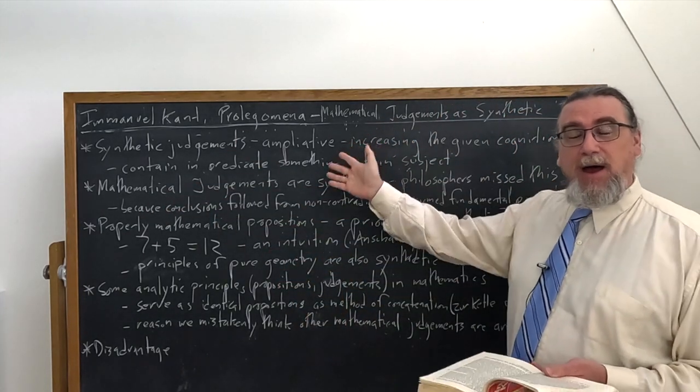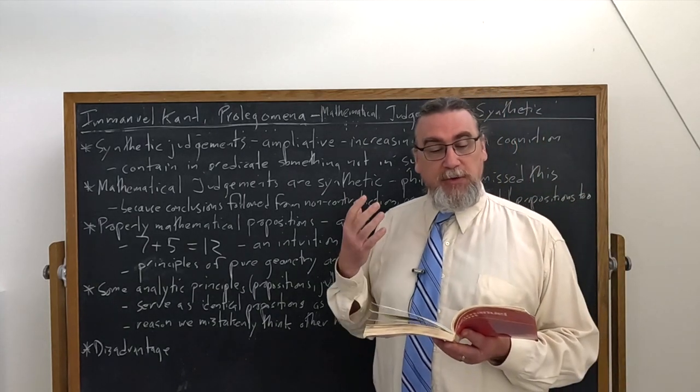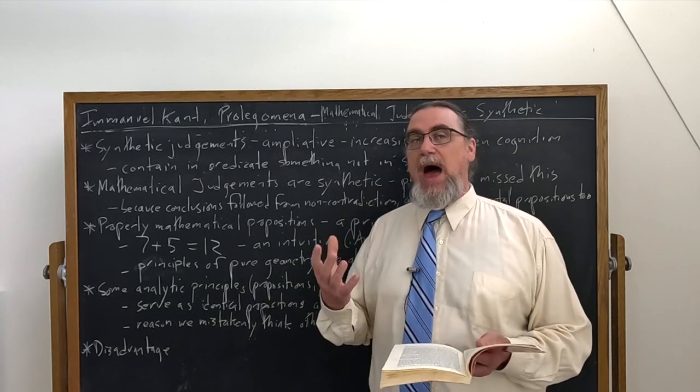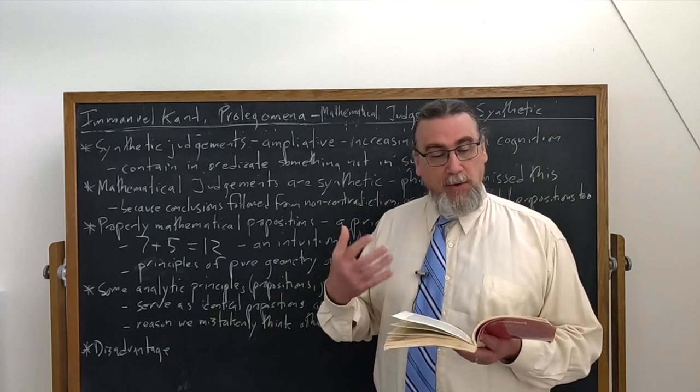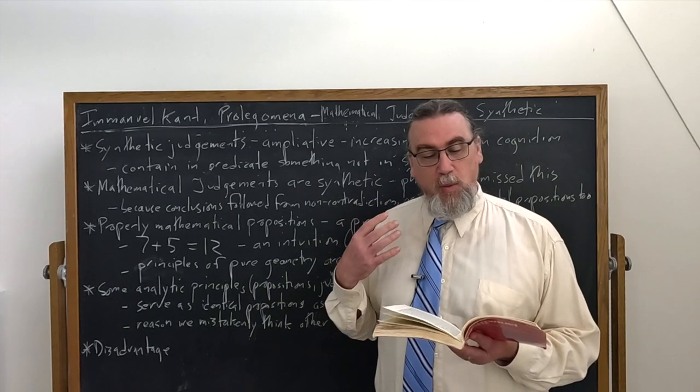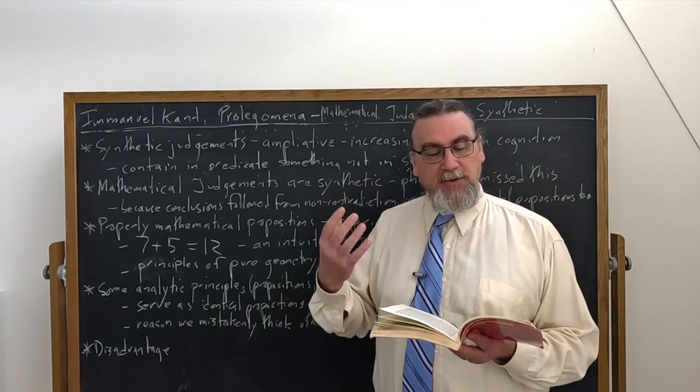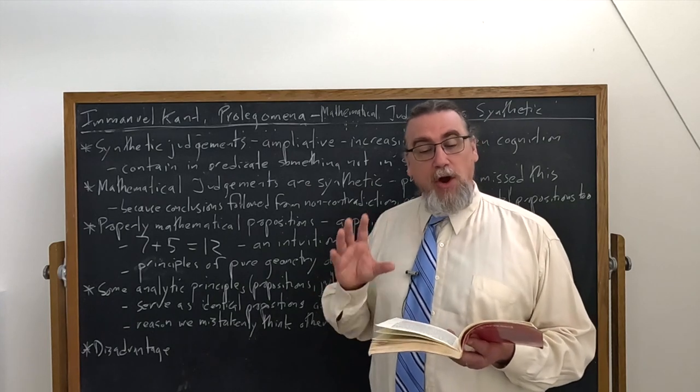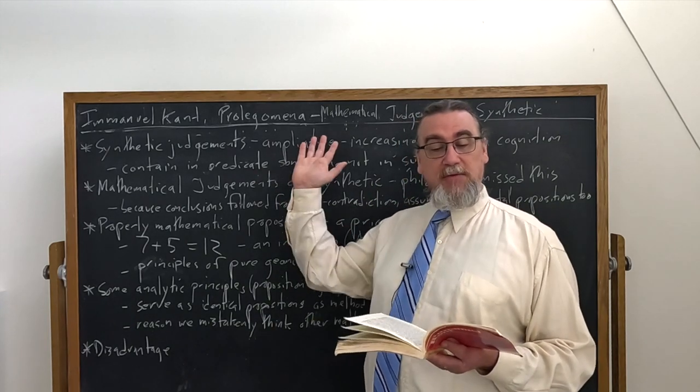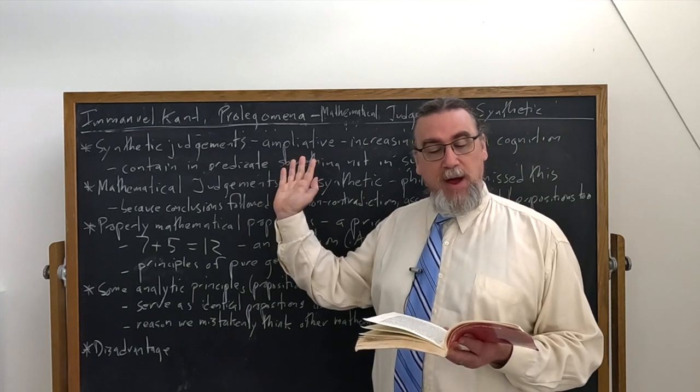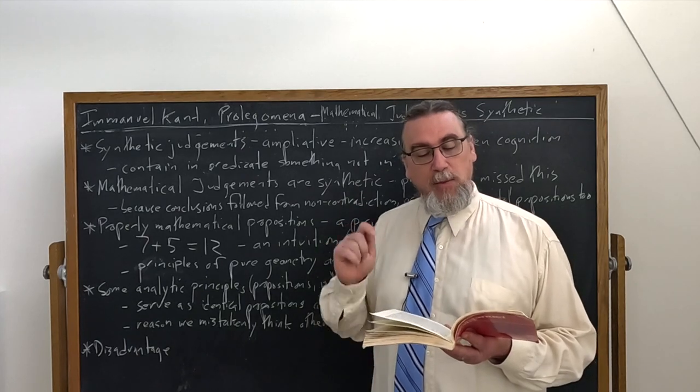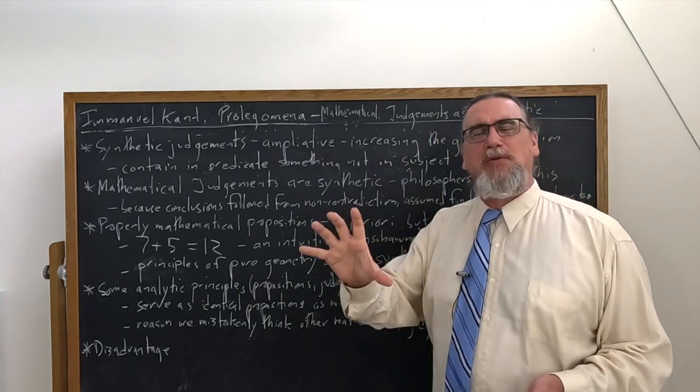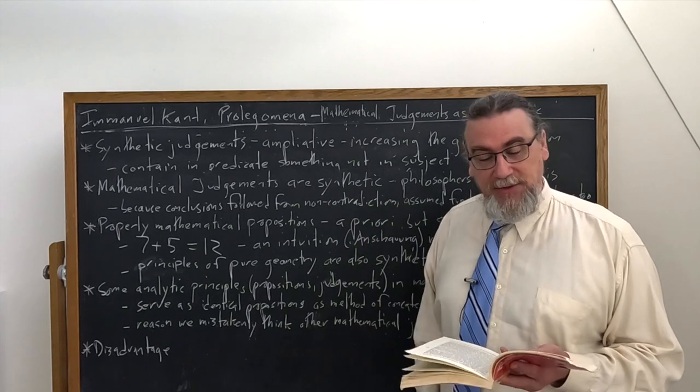There's the ampliative nature of synthetic judgments. We must go beyond these concepts by calling to our aid some intuition, some Anschauung, applying or corresponding to one of them, either our five fingers or five points. And we must add successively the units of the five given in the intuition to the concept of seven. So our concept, he says, is really amplified or widened, taken further by the proposition seven plus five equals 12. And we add to the first concept a second one not thought in it. The predicate contains something that isn't in the subject. This is a perfect example, according to Kant, of a synthetic judgment.